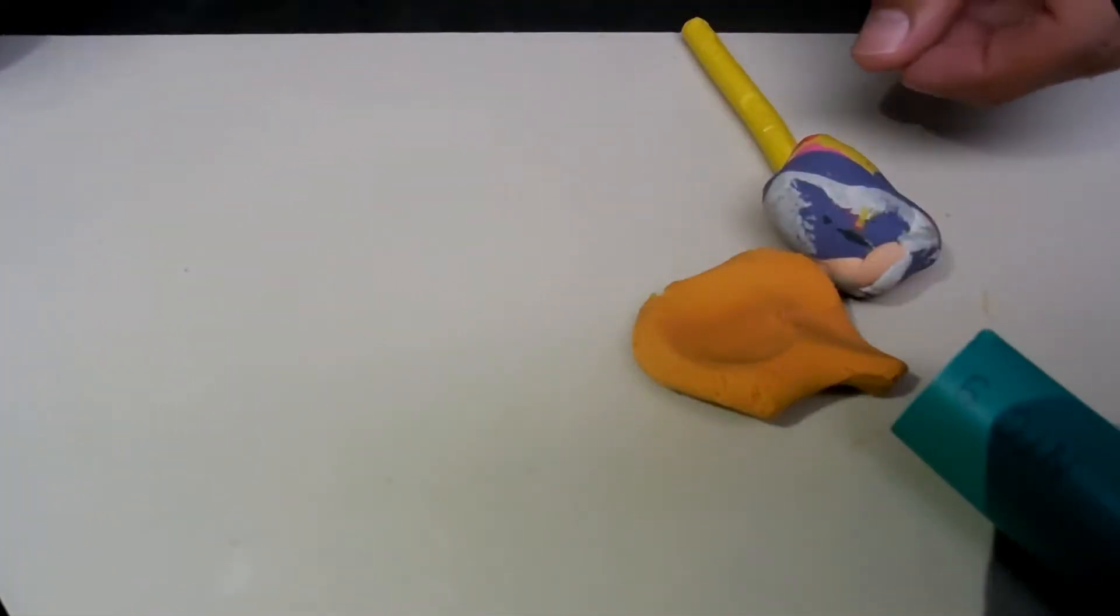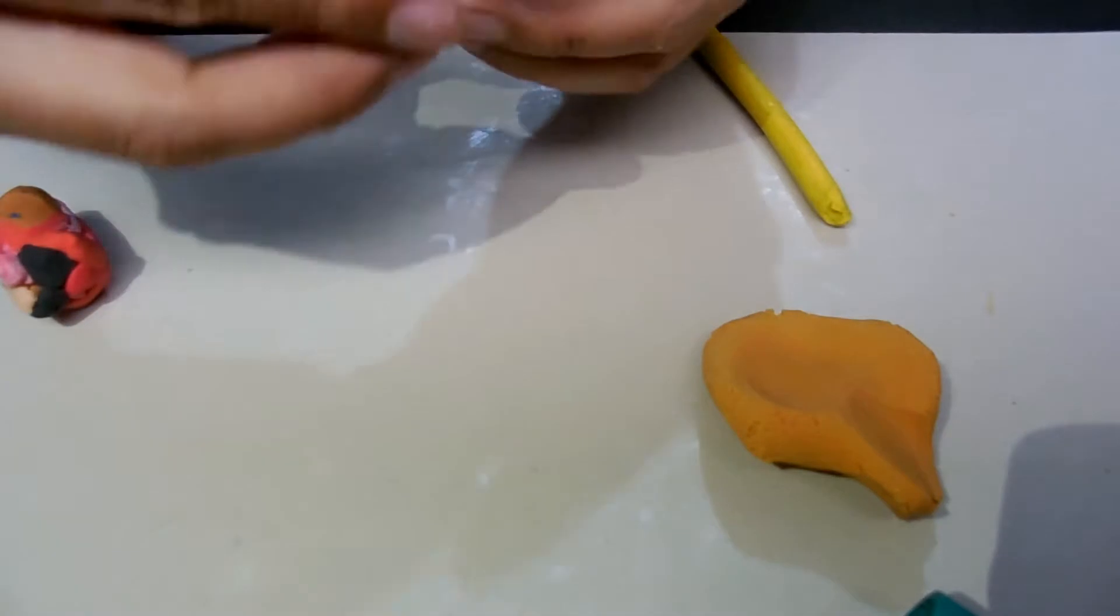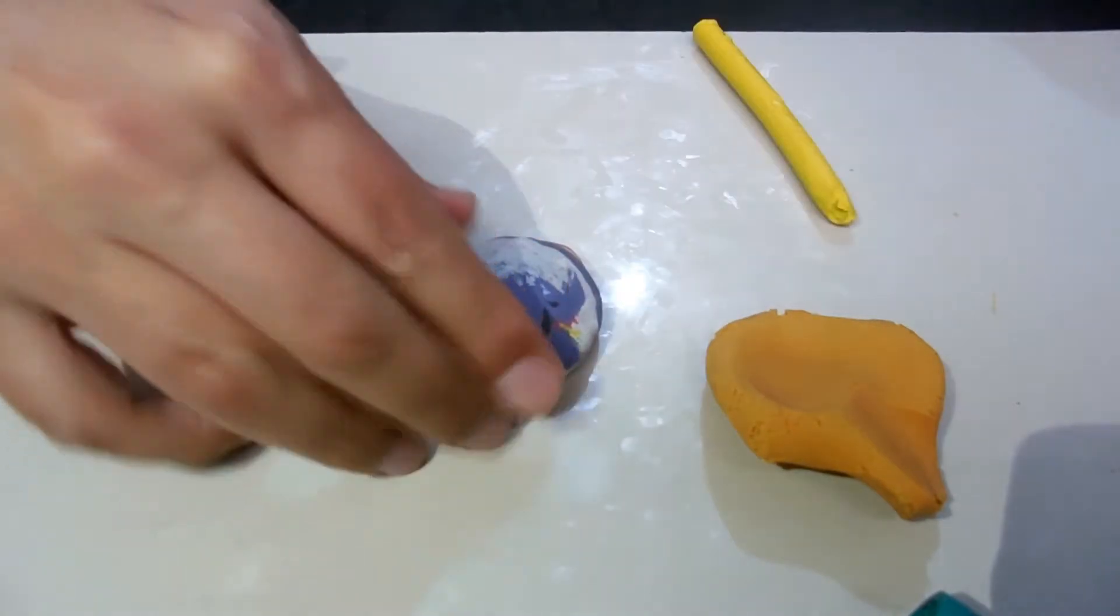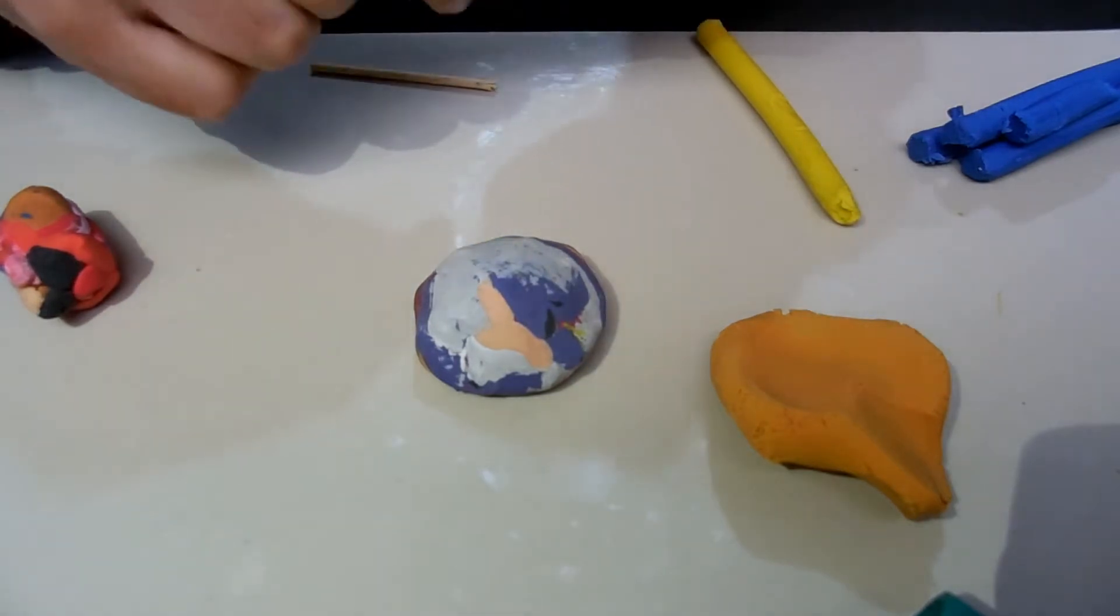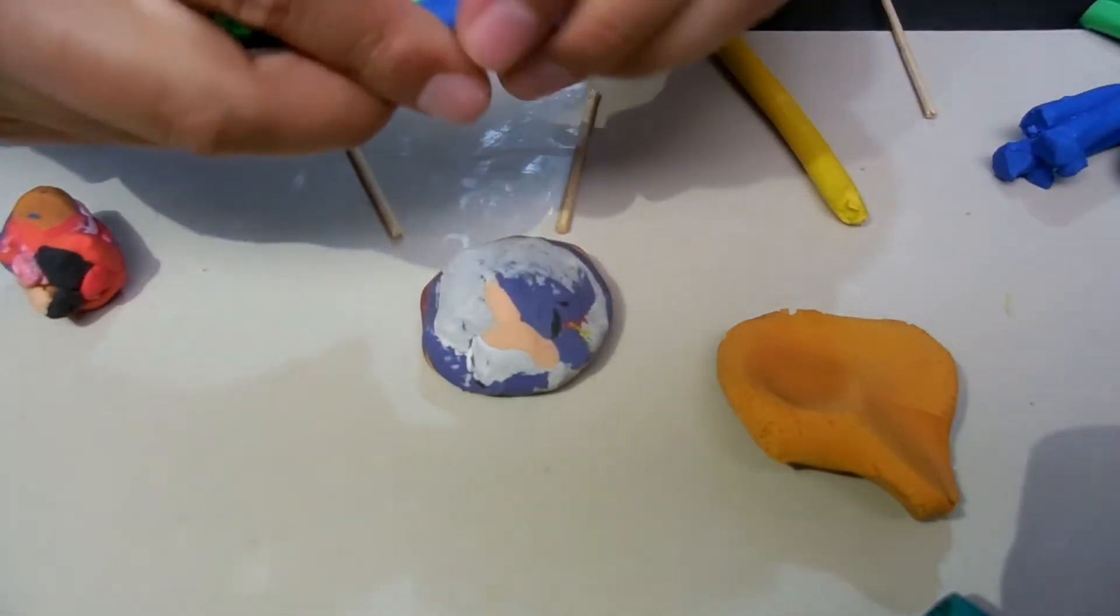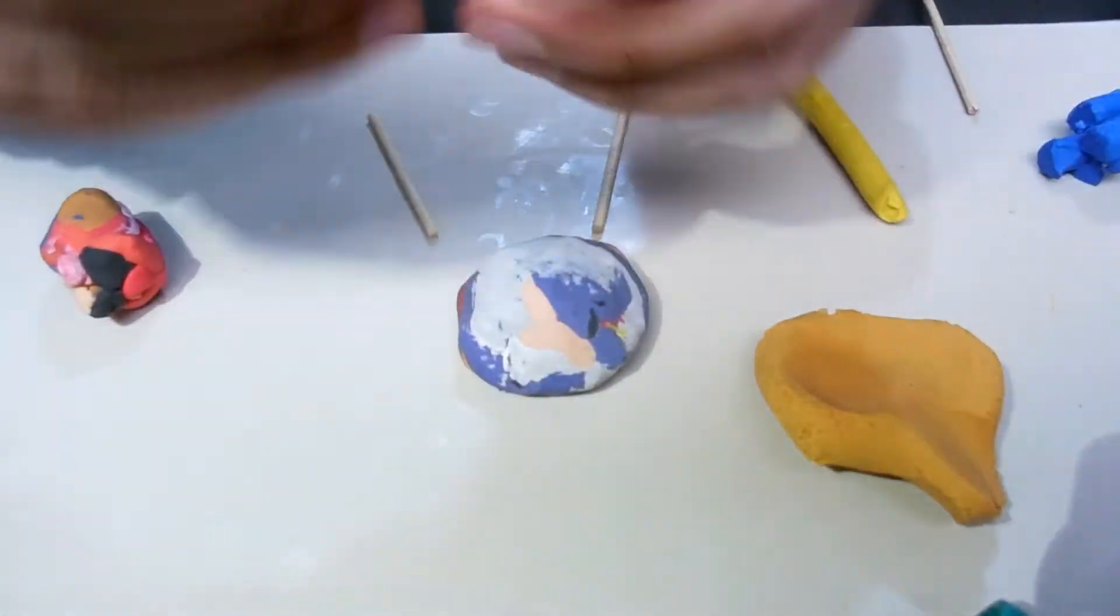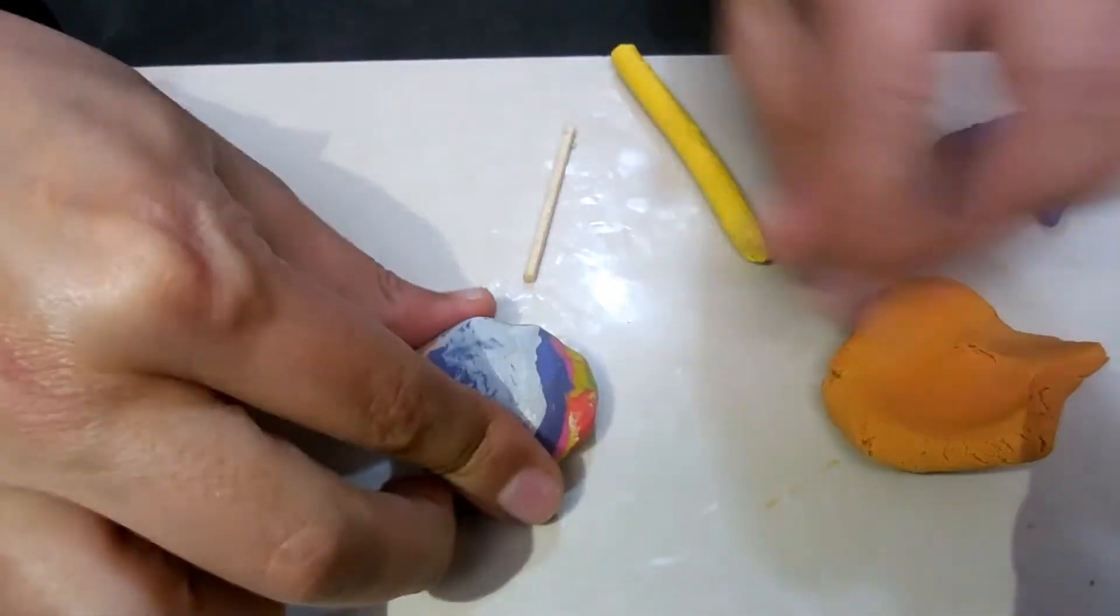En primer lugar, lo que vamos a hacer es una especie de basecita de plastilina para que nuestra figura se sostenga. En este caso voy a utilizar plastilina de sobrantes o relleno. Luego a eso vamos a recubrirla con el color que ustedes quieran, de su preferencia. En este caso yo voy a mezclar un poquito de verde con azul para oscurecer un poco, porque este color está como demasiado clarito. Entonces prefiero oscurecer un poquito más. Si no tienen verde, pues simplemente mezclan azul y amarillo. No hay ningún problema.